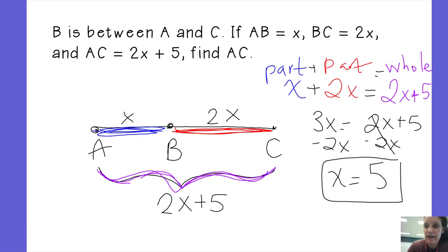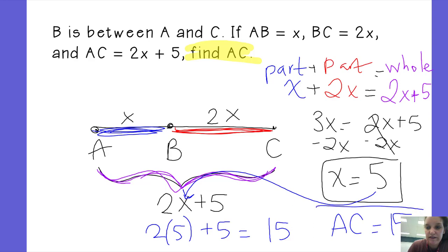But if I read the problem, it says find AC. So I have to go plug it back in. AC. I'm going to go plug my 5 back in for X. 2 times 5 plus 5 gives me 10 plus 5, which is 15. So AC equals 15. Final answer.